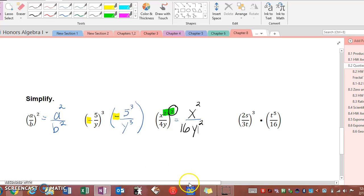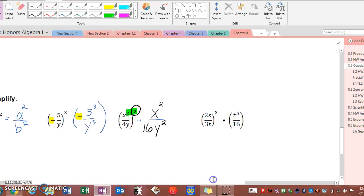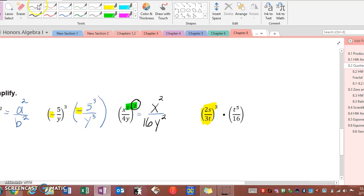In this last example we have a couple of things happening. We're first going to simplify this expression by raising everything inside those parentheses to the third power. So 2 to the third is 2 times 2 times 2 which is 8, and then we have s to the third. 3 to the third, 3 times 3 times 3 which is 27, and then we have t to the third.